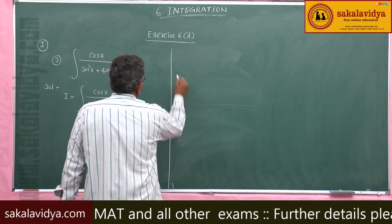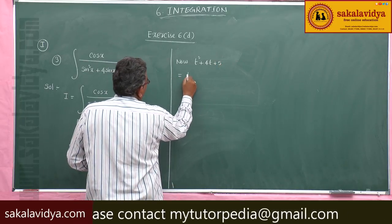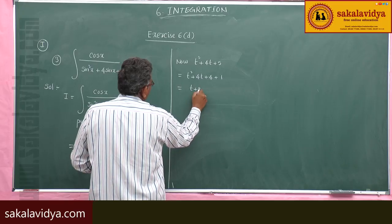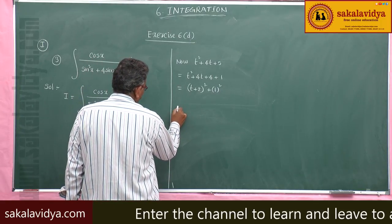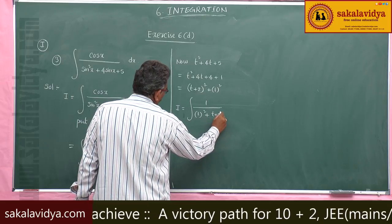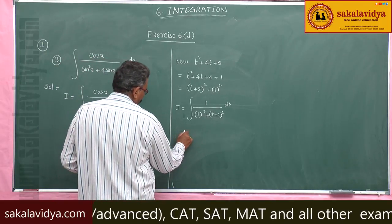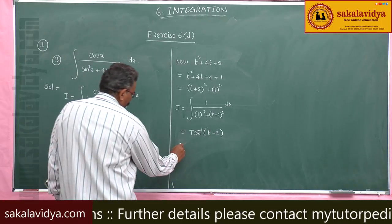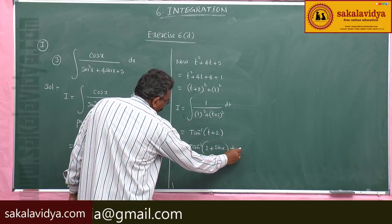Now, t² plus 4t plus 5 can be written as t² plus 4t plus 4 plus 1, which is (t plus 2)² plus 1². So the integral becomes integral of 1 by 1² plus (t plus 2)² dt. This is in the form of 1 by a² plus x², giving 1/a times tan inverse of x/a. So this equals tan inverse of (t plus 2). Since t stands for sin x, this equals tan inverse of (sin x plus 2), plus constant of integration.